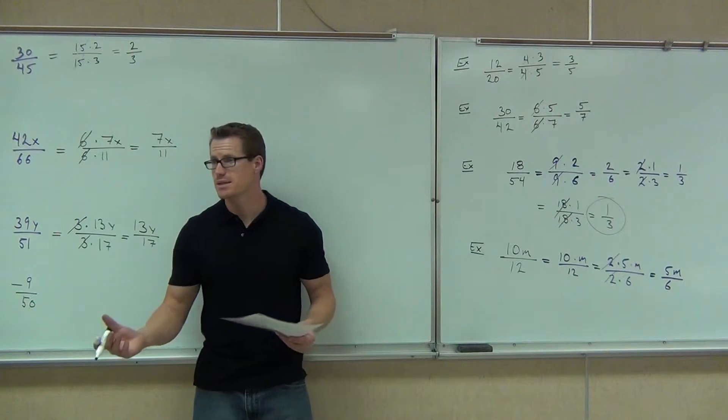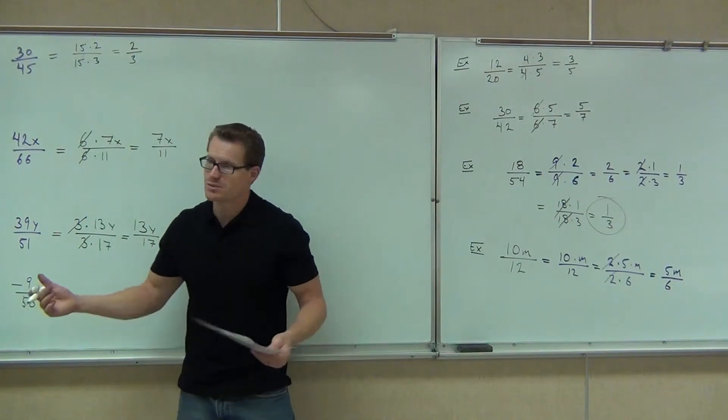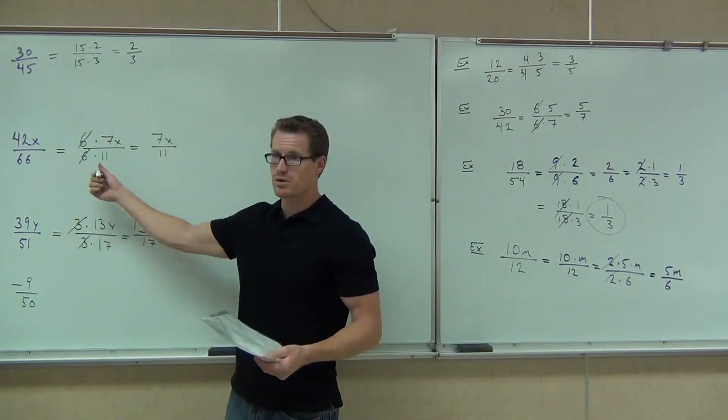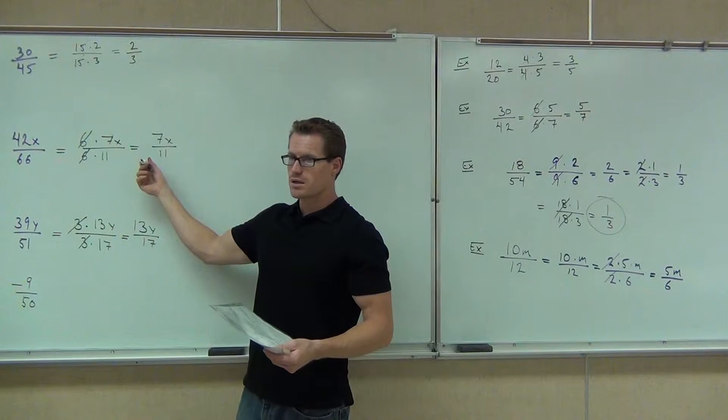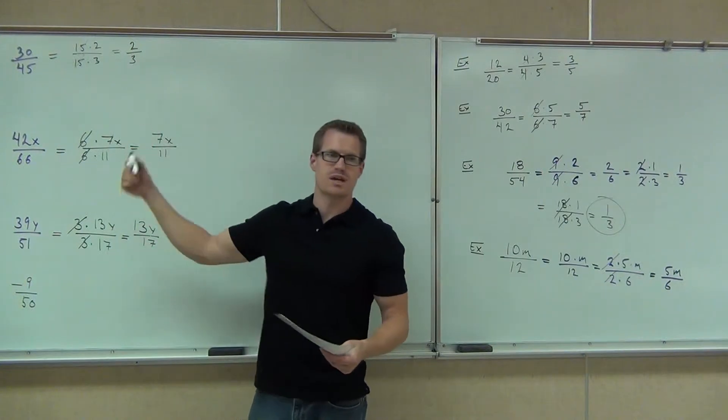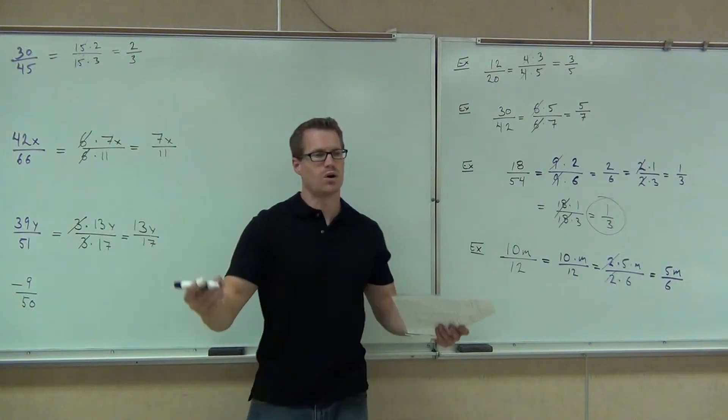Sometimes that does happen. That's why we're able to stop on these fractions, right? When you get down to this far, you're done. Because nothing divides both 7 and 11 besides 1.